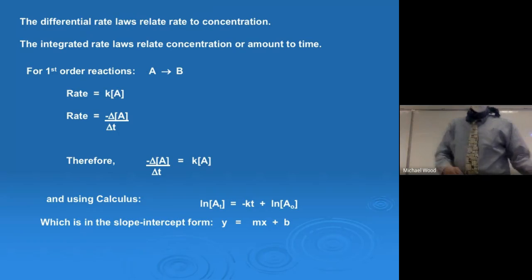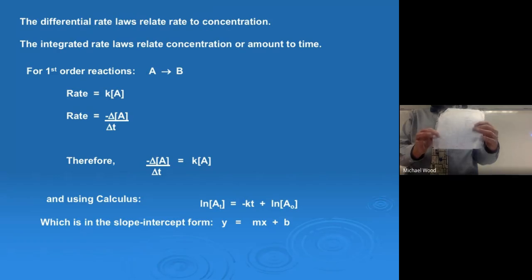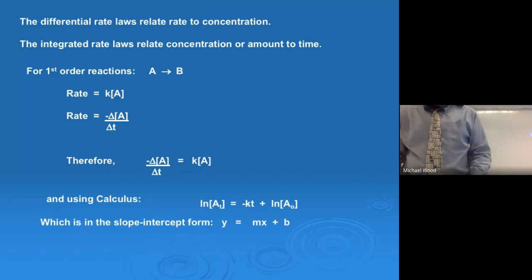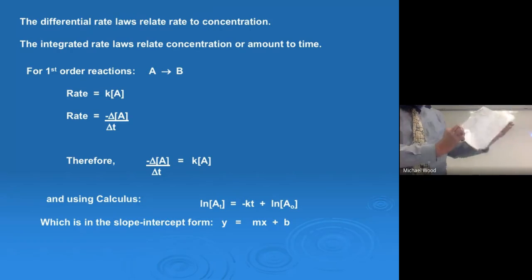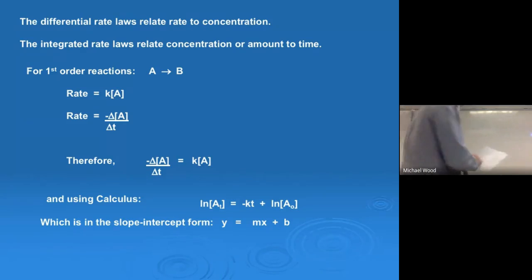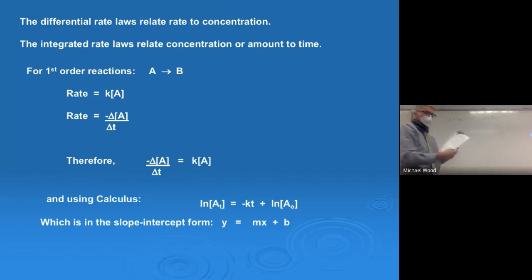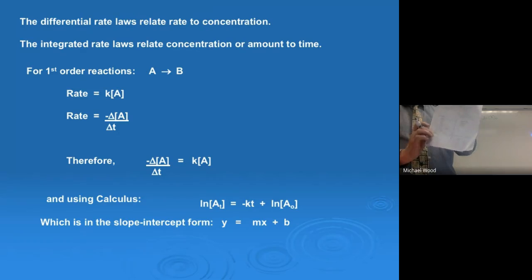For first order reactions, this is the equation, and it's on the formula sheet under kinetics. I've written it in a different order but it's the same thing. You might want to note this — this is the first order integrated rate law: ln[A]t minus ln[A]₀ equals negative kt. The way I have it written: ln[A]t equals negative kt plus ln[A]₀. Same thing.